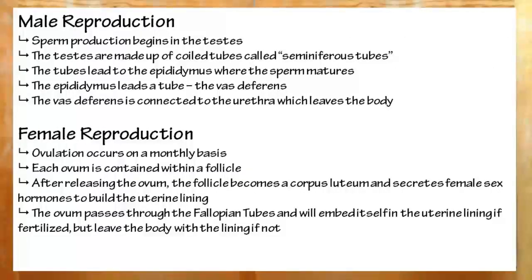And spermatogenesis, or the creation of sperm. Sperm are created in the testes, which are actually wound-up seminiferous tubes. From there, the sperm moves on to the epididymis, where it matures, and then to the vas deferens, a tube leading ultimately to the urethra and out the body.